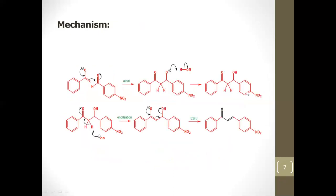The mechanism: an enolate is first formed from the ketone in the presence of a base. The enolate attacks para-nitrobenzaldehyde, giving the aldol product in the presence of the base. Then via E1cb elimination — elimination unimolecular conjugate base — we get the alpha-beta unsaturated carbonyl compound.